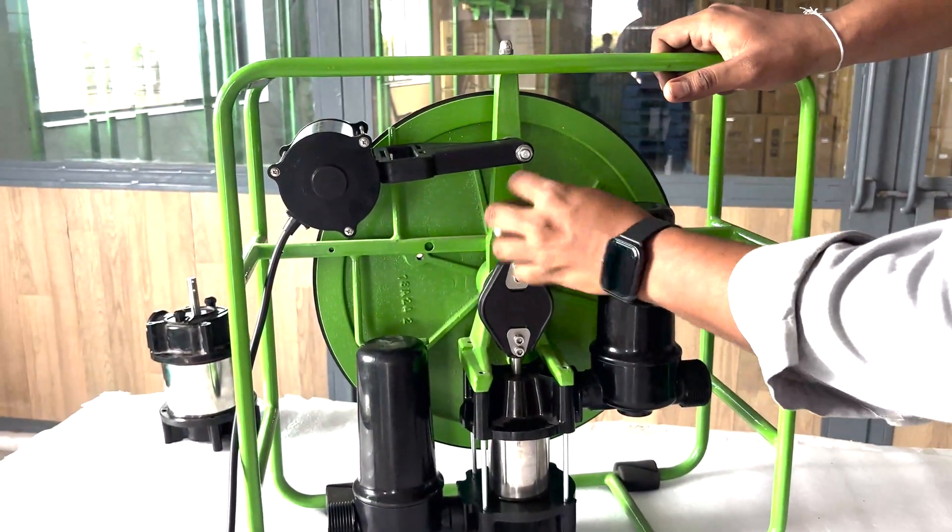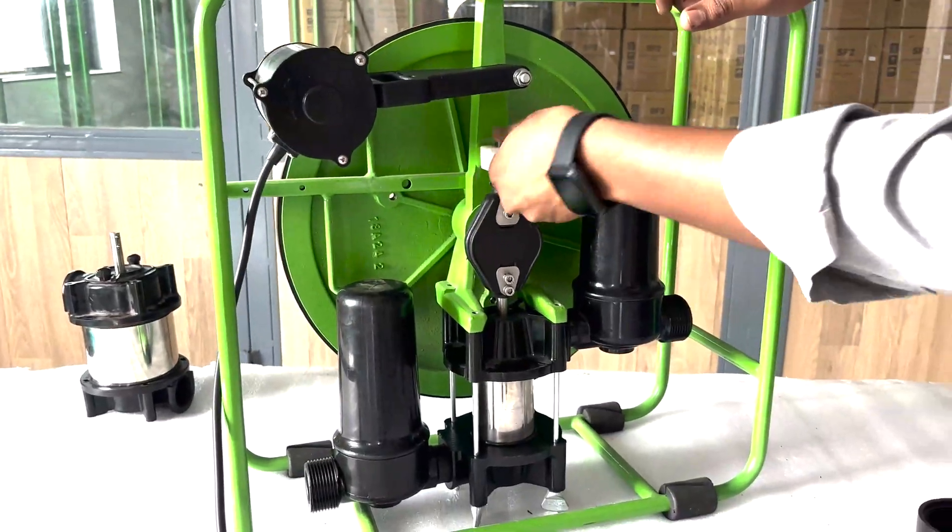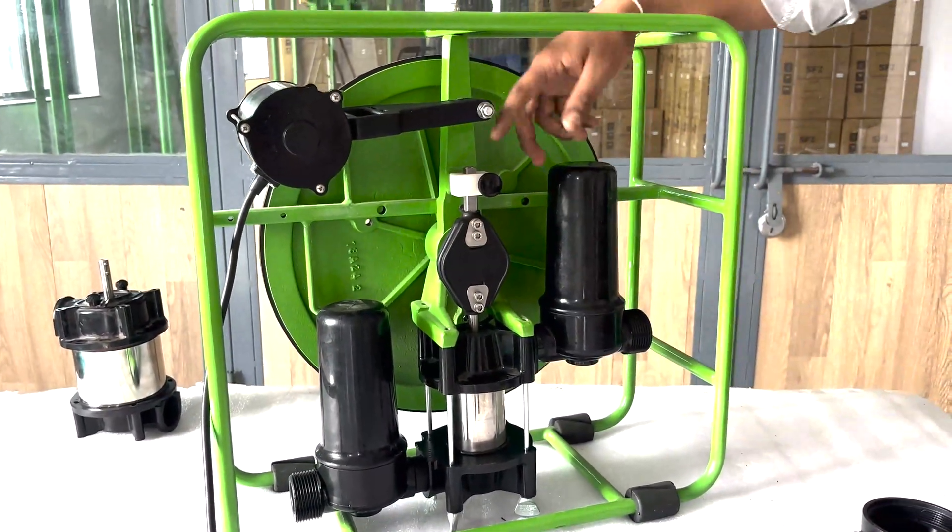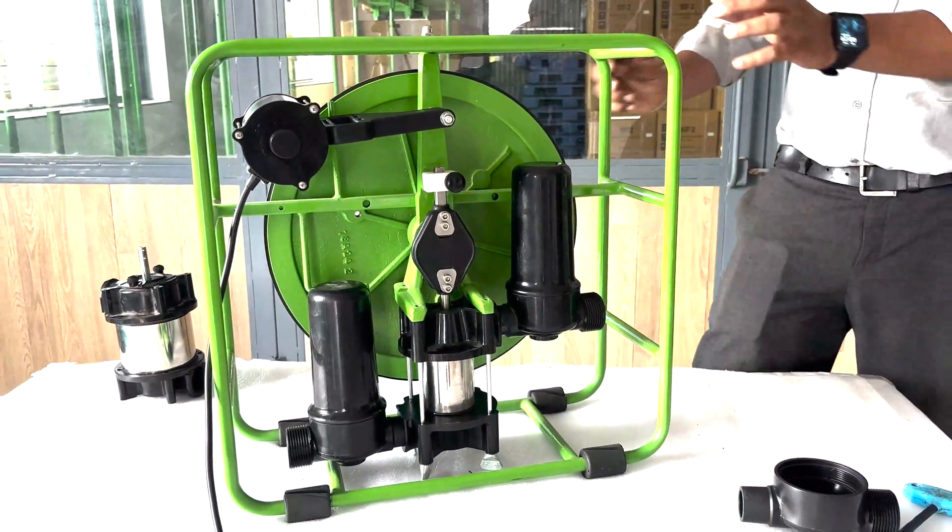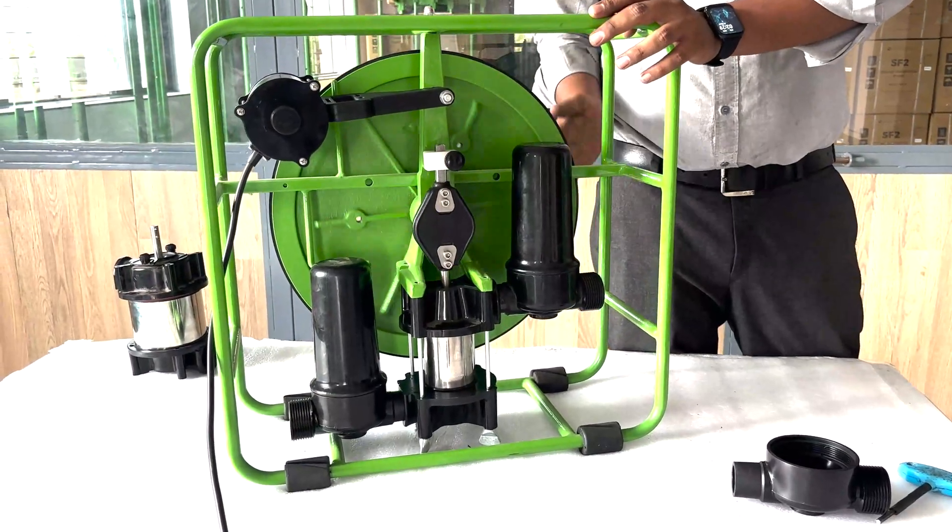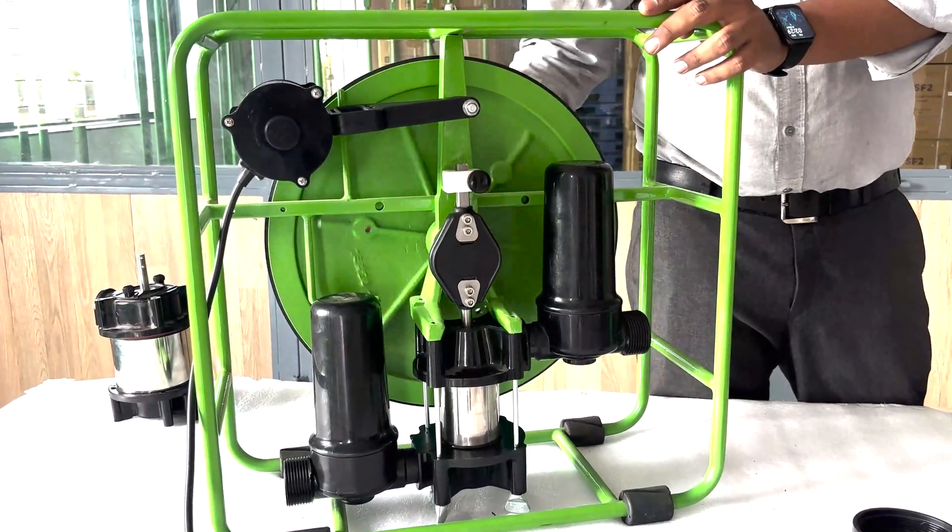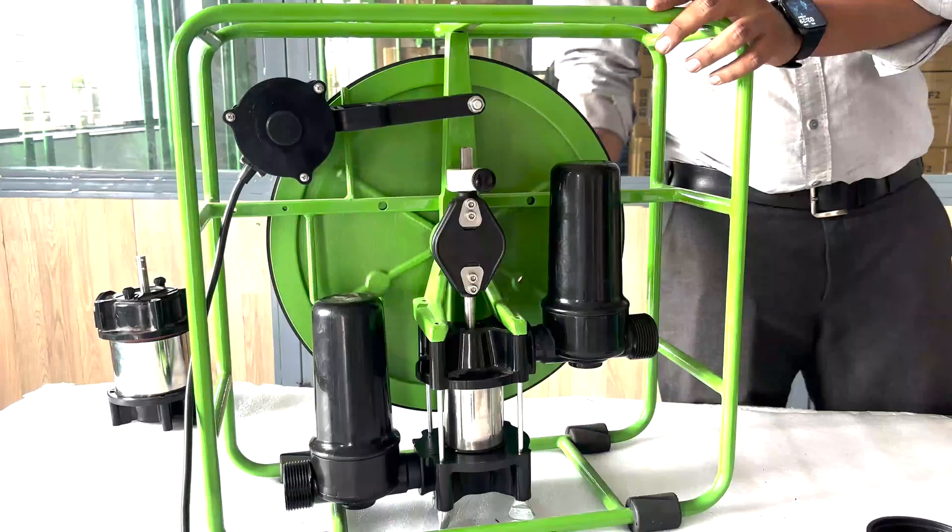Now place the yoke guide and secure it with the knob. Give the pump a gentle spin to confirm if it's running smoothly. Your SF2H is ready for usage.